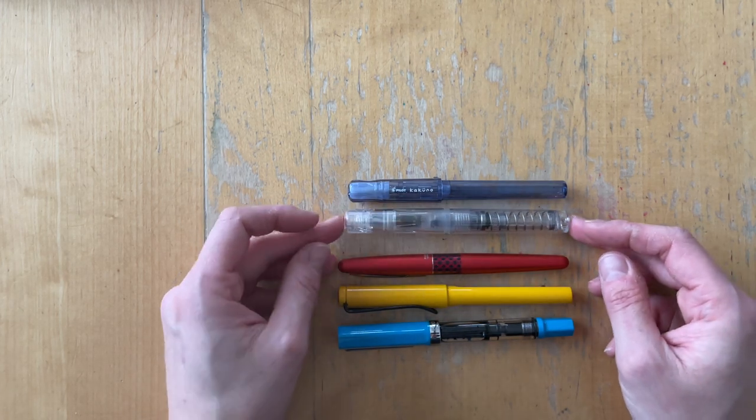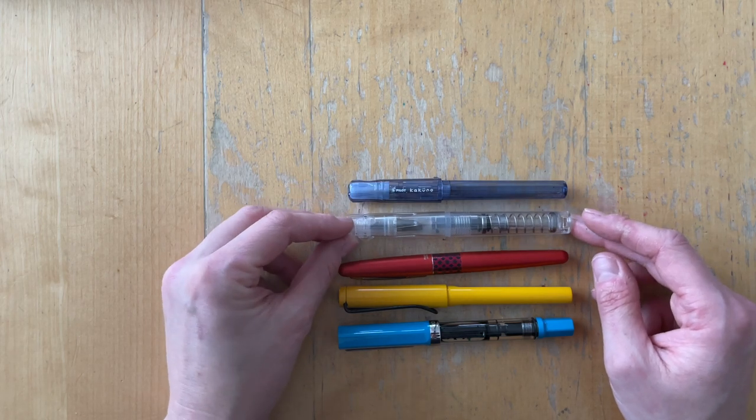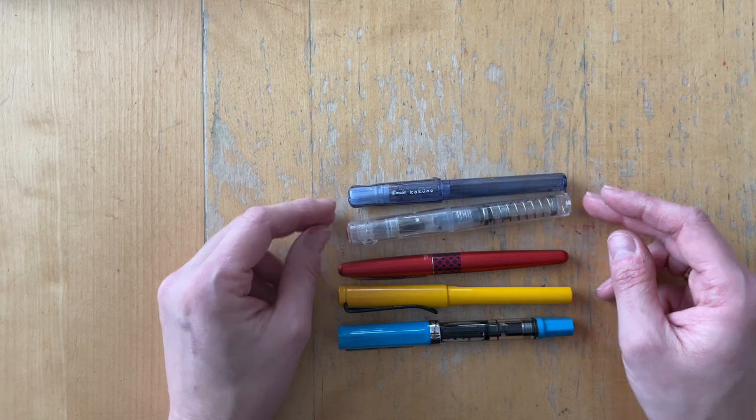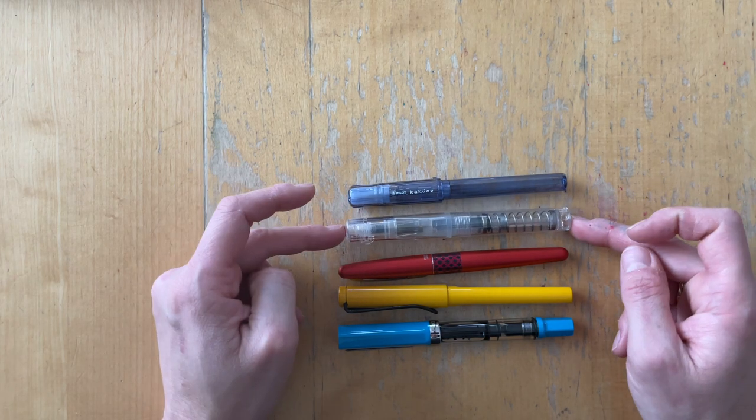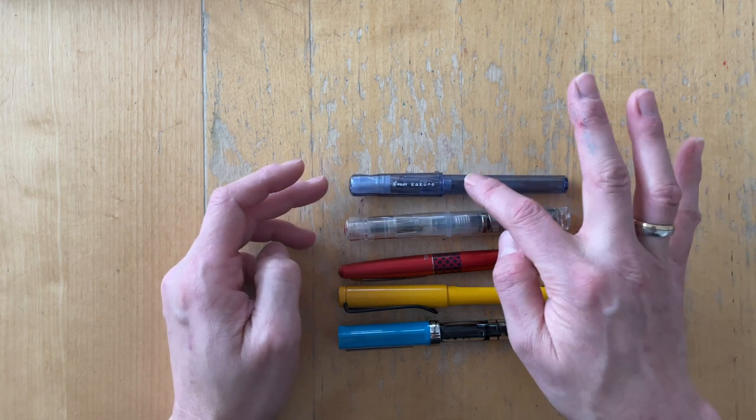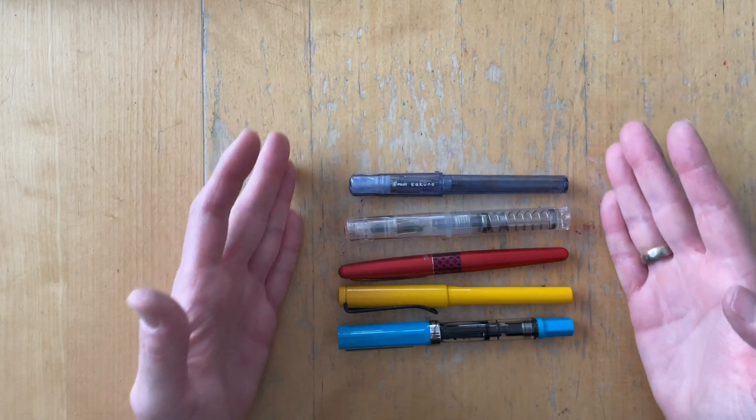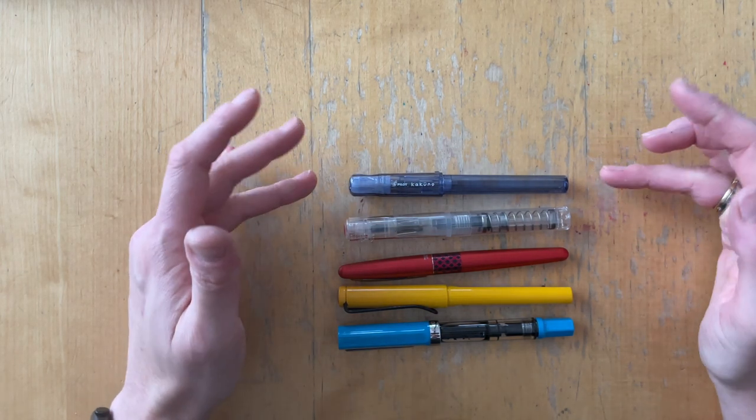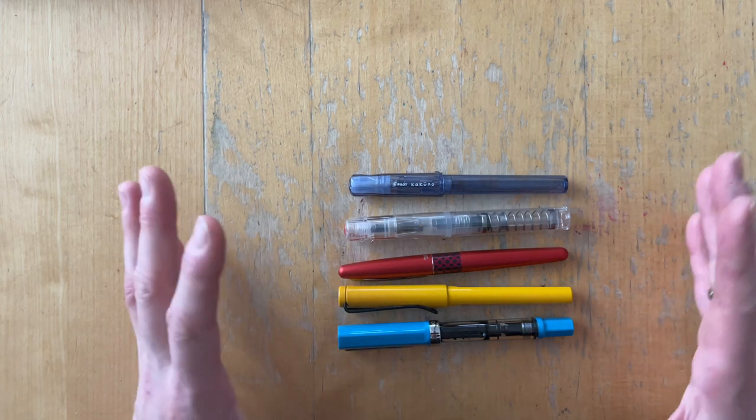It actually reminds me of the TWSBI Go. I know that the filling mechanism is very different, but it doesn't have a clip. This one has a roll stop, however this one is cheaper than this one. So I think the price range is very, this is also cheapest sorted by price range if I'm not mistaken.